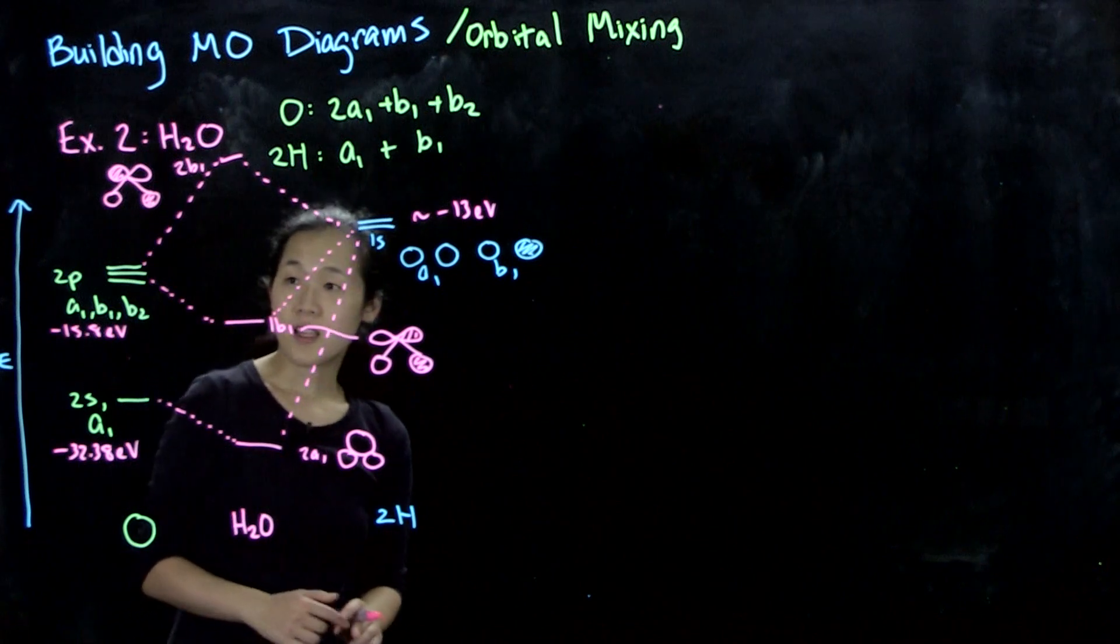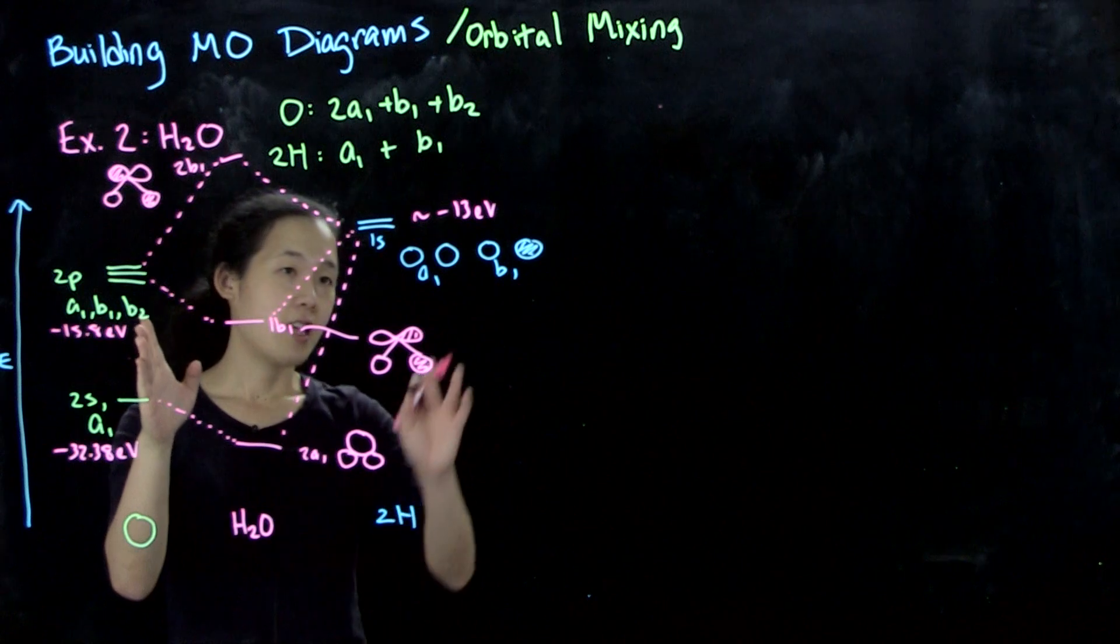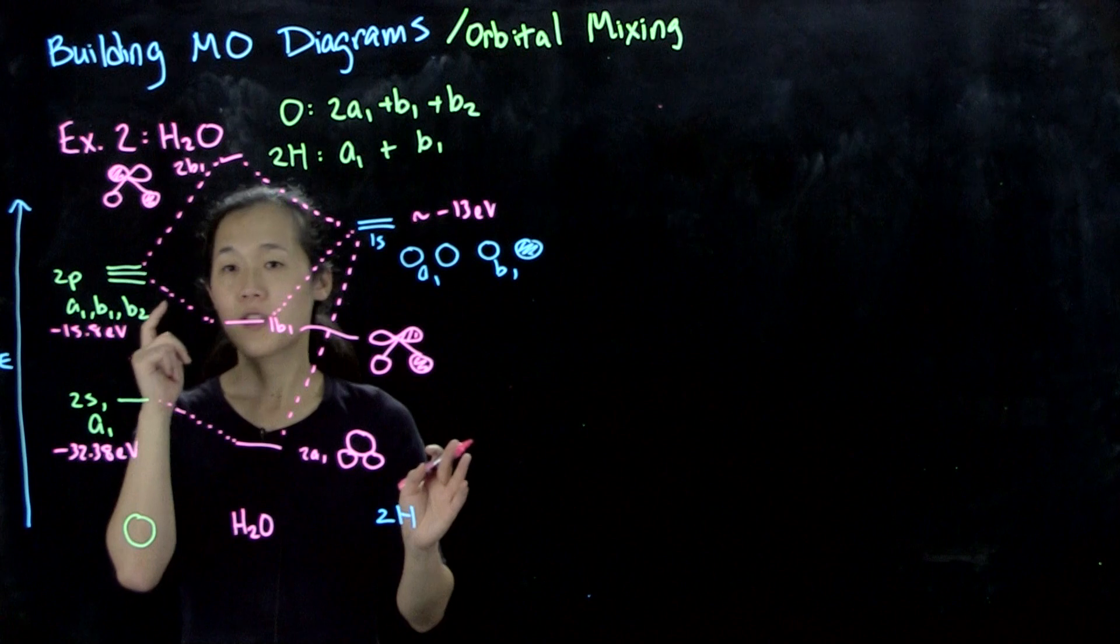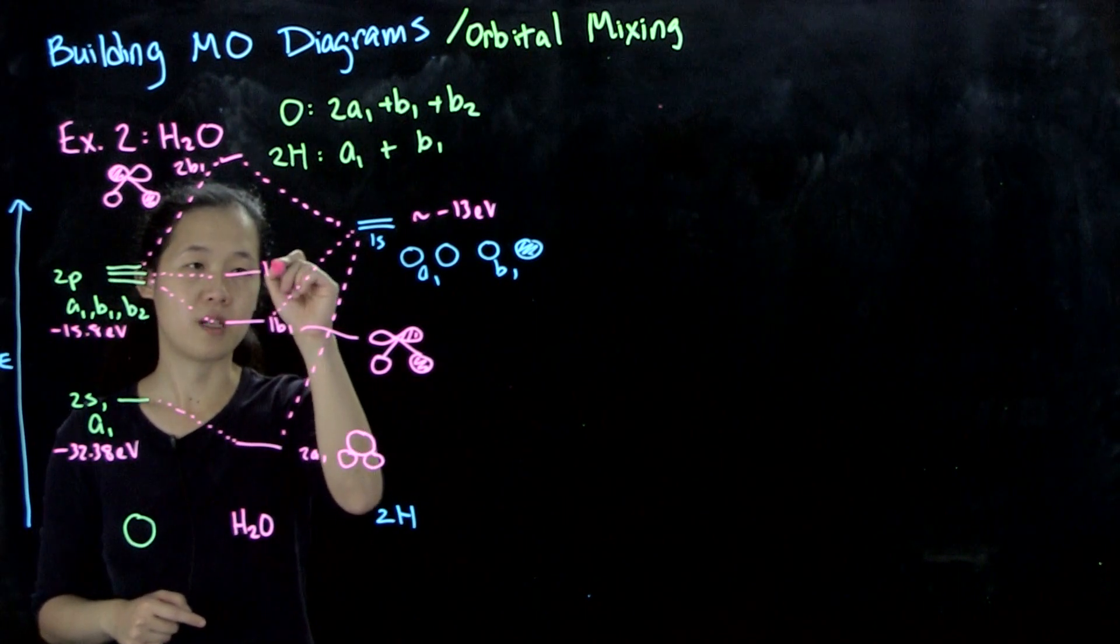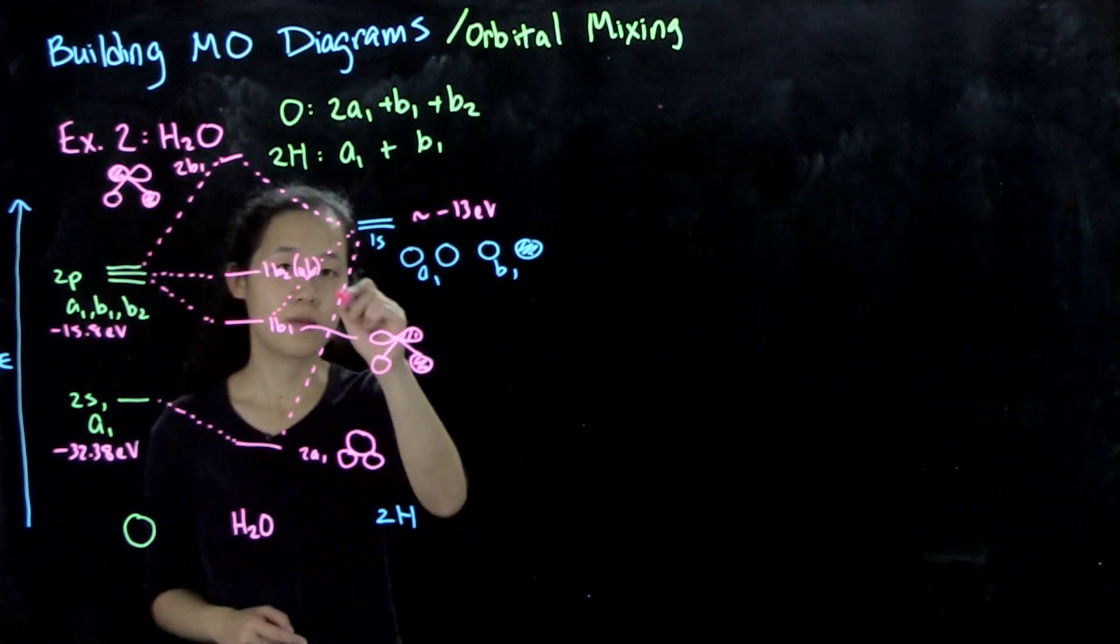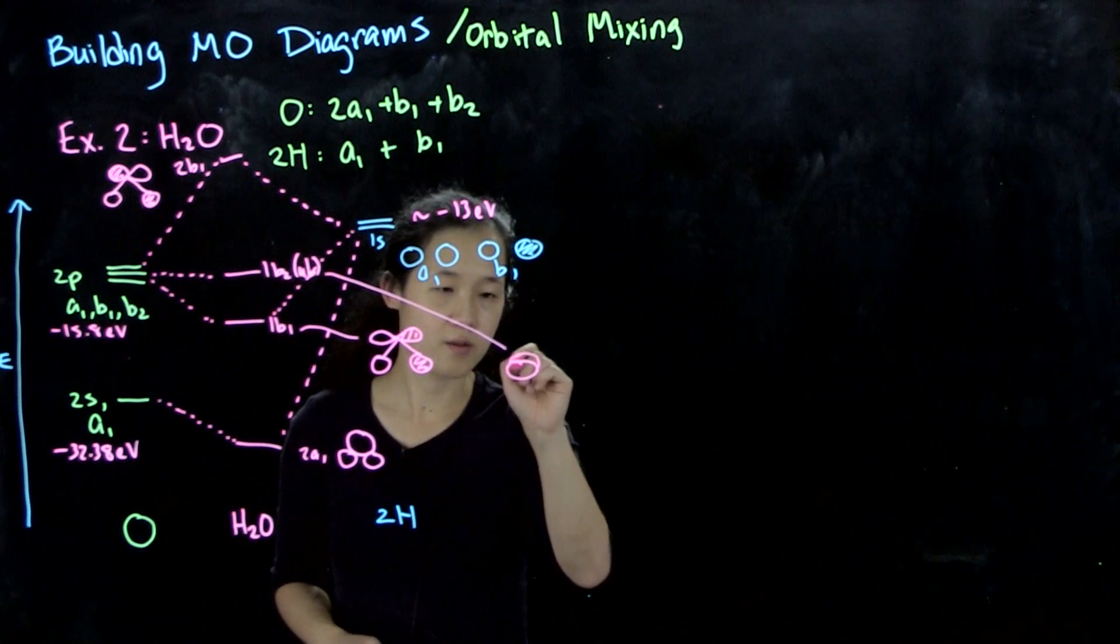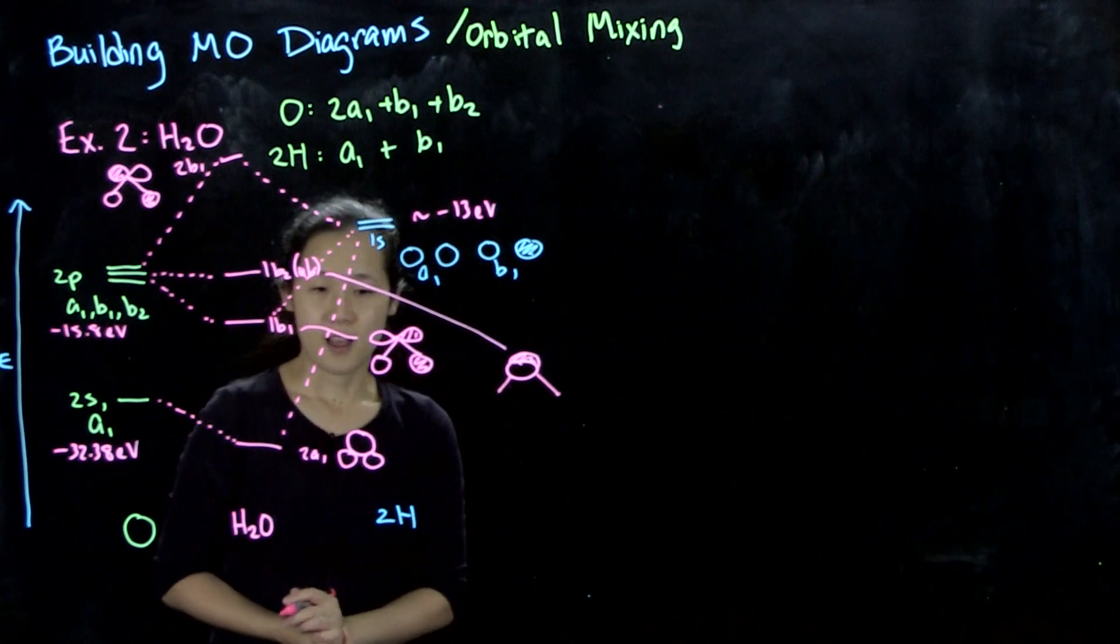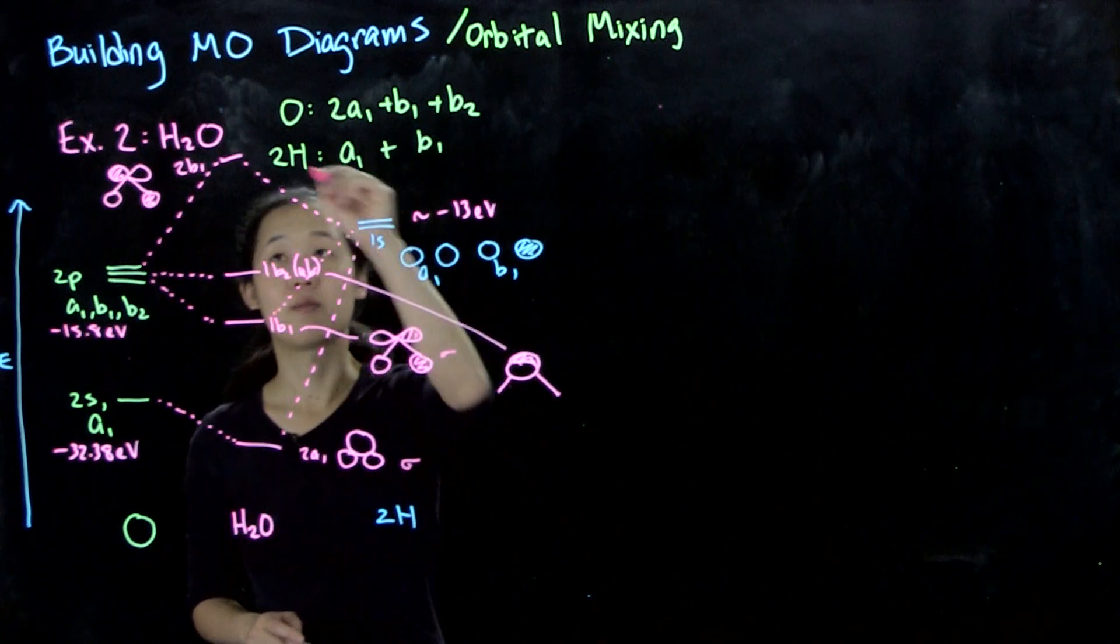We see this b2 atomic orbital, the py orbital of oxygen. There is no corresponding hydrogen SALC of the same symmetry, so this cannot interact. This will be our non-bonding 1b2. This one goes into the board, with no contributions from the hydrogen atoms. This is a sigma bond. You don't have to label these, but this is sigma, this is sigma, this is sigma star.